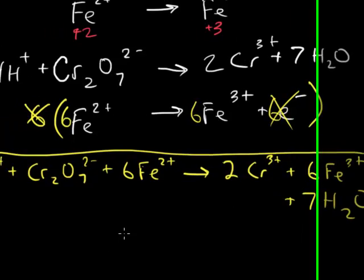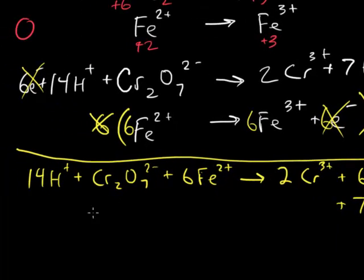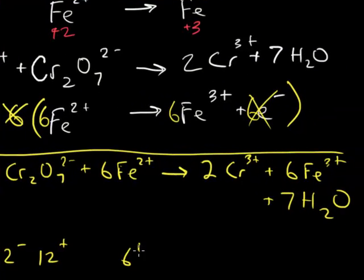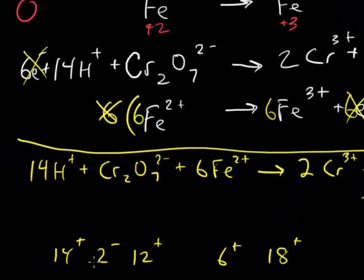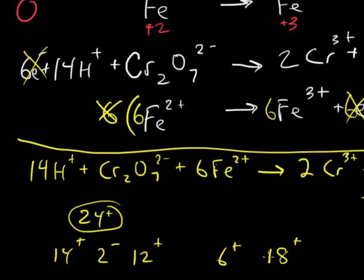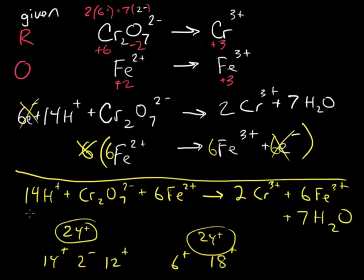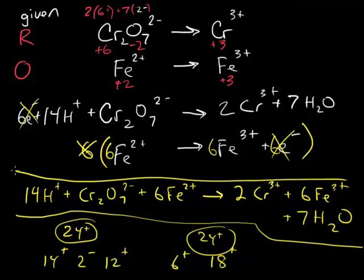And now the equation should be balanced, so let's check. We've got 14 positives. So 14 positives, 2 negatives, 2 negative, 6 times 2, that's 12 positive. Then on this side, 2 times 3, that's 6 positive. Then on this side, 2 times 3, that's 6 positive. 6 times 3, that's 18 positive. So here we've got 14 plus 12, that's 26 minus 2, that would be 24 positive. And over here, 6 plus and 8 plus, that's 24 positive. So this here is our balanced oxidation reduction equation. Charge balanced and number of atoms balanced.